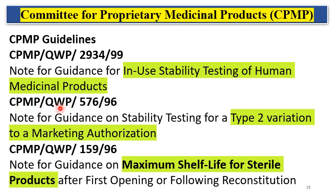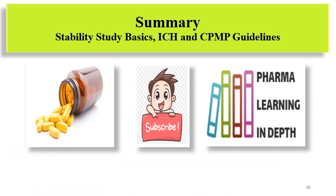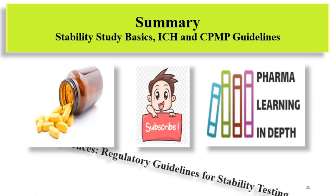CPMP QWP 57696 deals mainly with guidance on stability testing for type 2 variation to marketing authorization. These variations are like scale-up and post-approval changes for the US market, called variations in the European market. Guideline 15996 is a note for guidance on maximum shelf life for sterile products after first opening or following reconstitution.